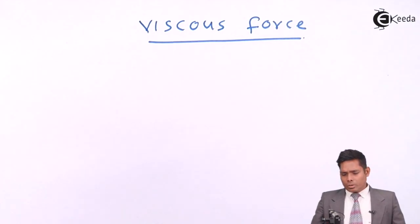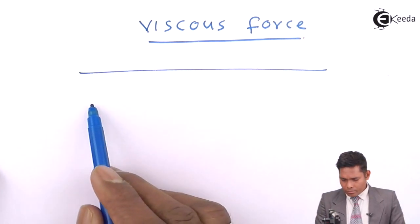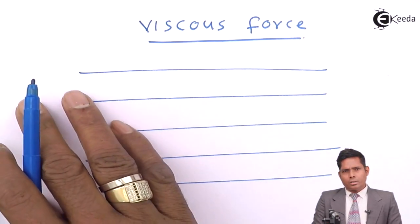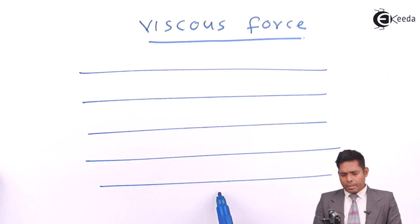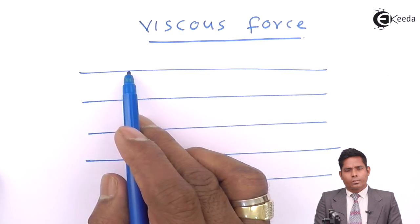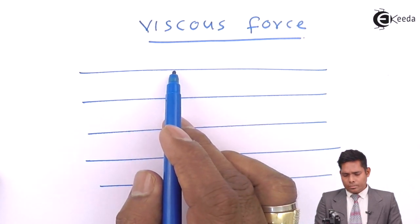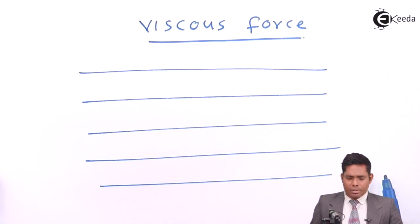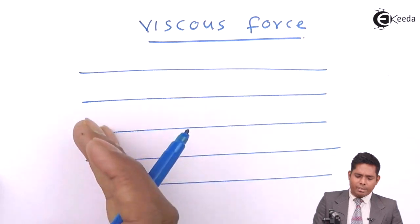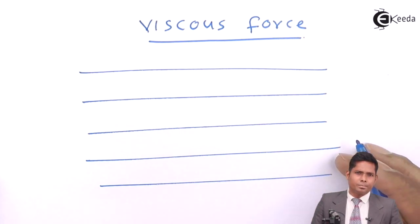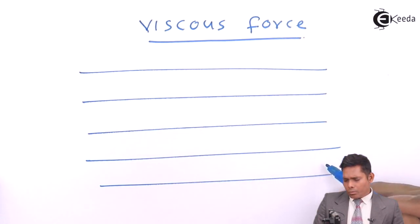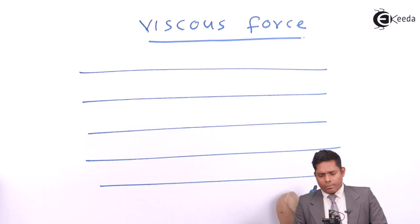Let us understand with one diagram. Let the river water be flowing like this. This is the bed of the river, and this is the surface of the river. I consider a coordinate system — this is my x direction and this is my y direction. I have considered five layers of water.